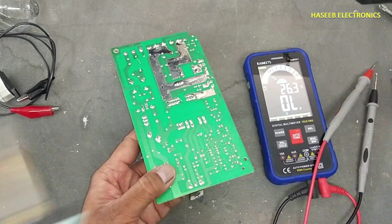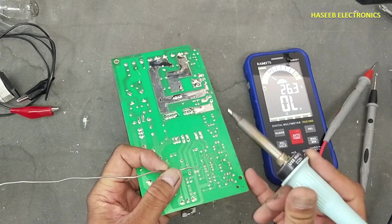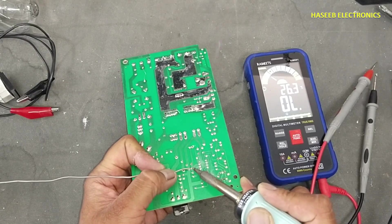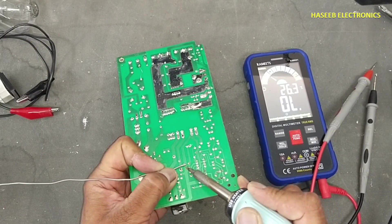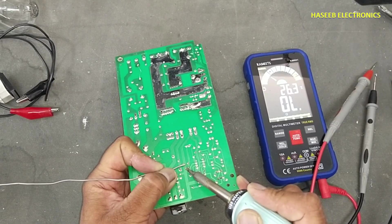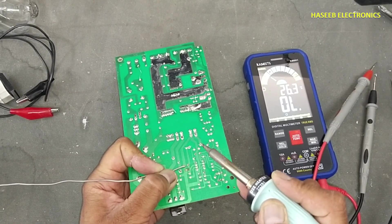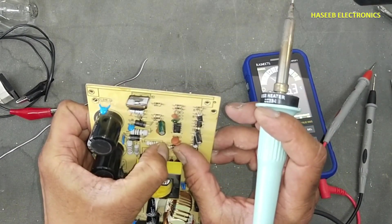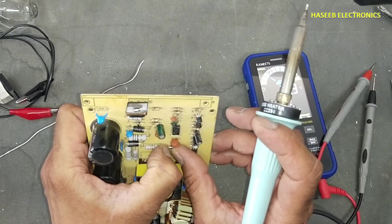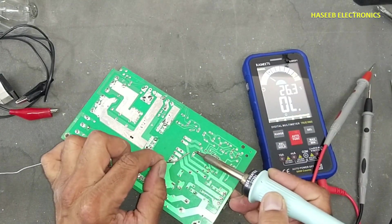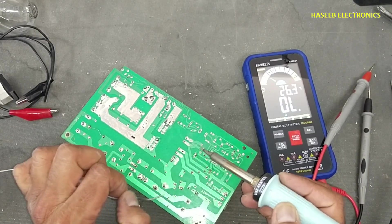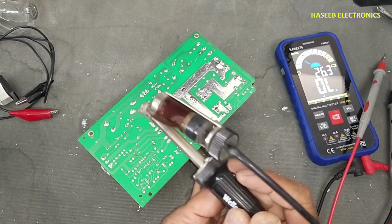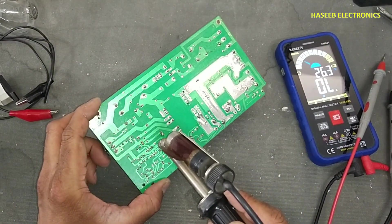I will install back this capacitor and now we will replace this IC. We will remove this IC to check the continuity. I will install back this diode. Now I will remove IC to verify the short circuit condition.